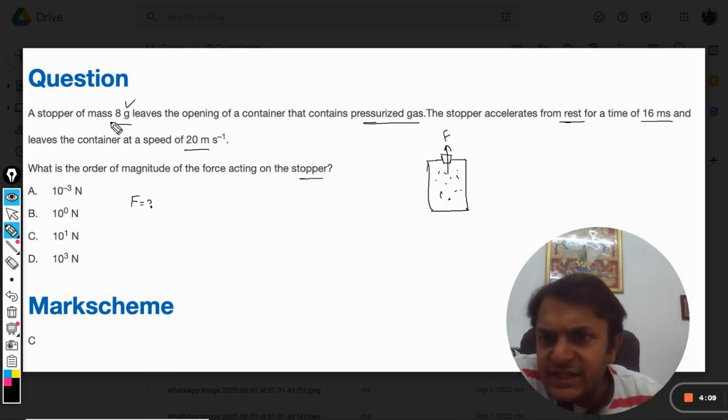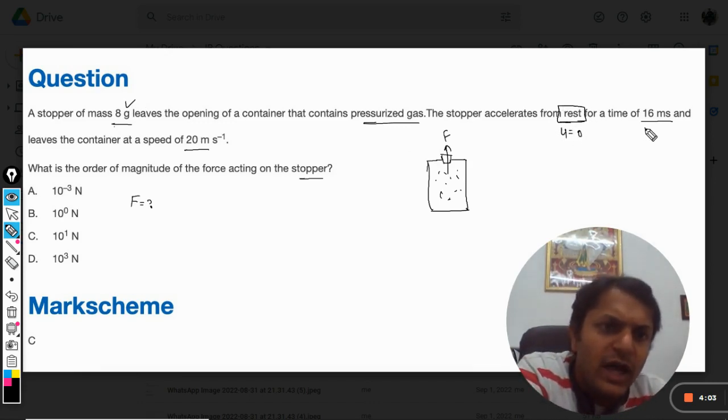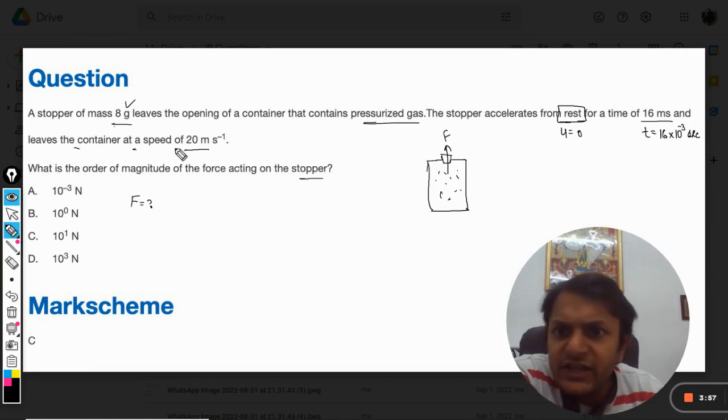The force is there, the mass is 8 grams, and initially it was at rest so u equals 0. The time taken is 16×10^-3 seconds. It leaves the container at a speed of 20 meters per second, so that is the velocity v.